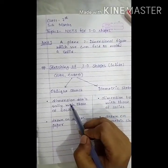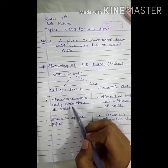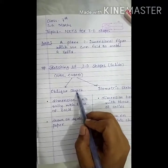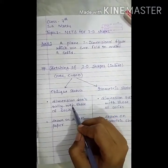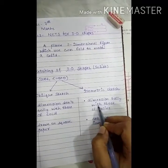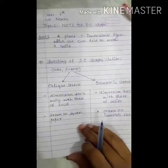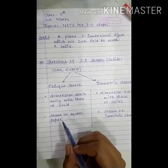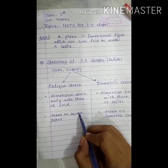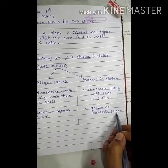In an oblique sketch, the dimensions do not tally with those of the solids. Means joh dimensions given hongi jiska hum solid sketch karna hai, woh oblique sketch mein exactly match nahi karengi. But in an isometric sketch, the dimensions tally with those of the solids — the dimensions match. Oblique sketch is drawn on square paper, and isometric sketch is drawn on isometric sheet.